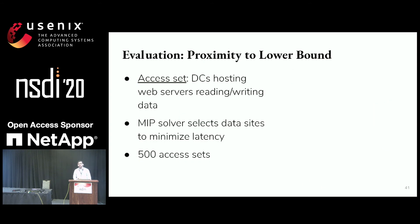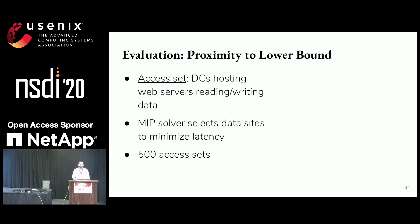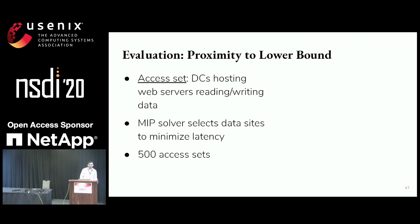In our evaluation, we're primarily asking: how close is Pando, or any other approach, to the lower bound, across a range of scenarios? We vary the set of web servers accessing the data — one might exist in Northern Europe, one in Eastern US — and we try 500 different access sets.